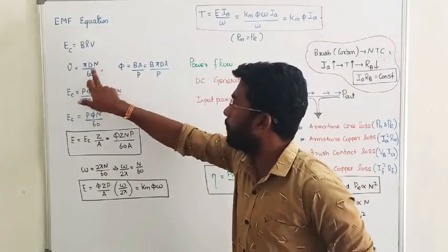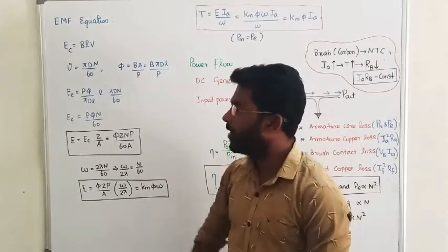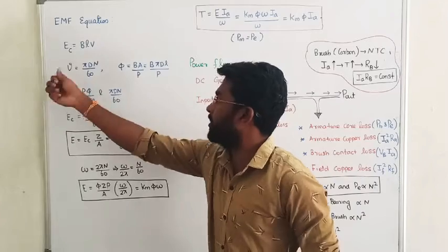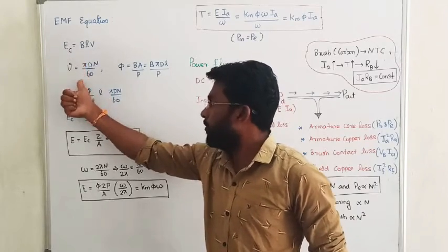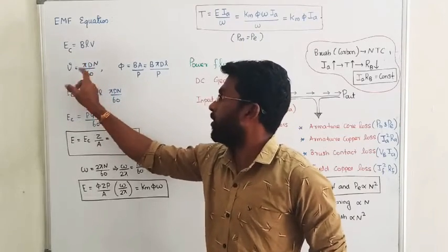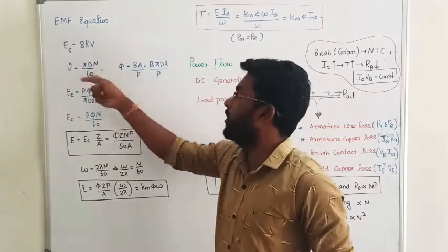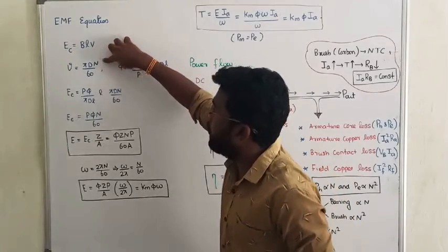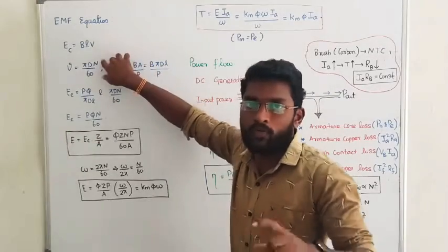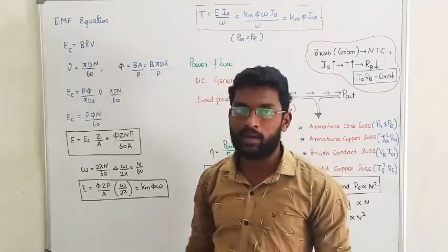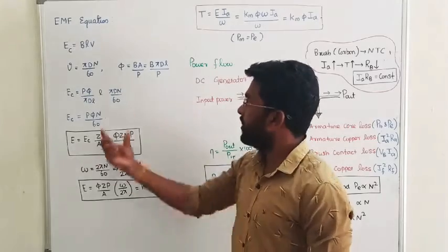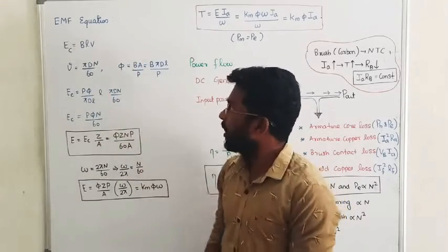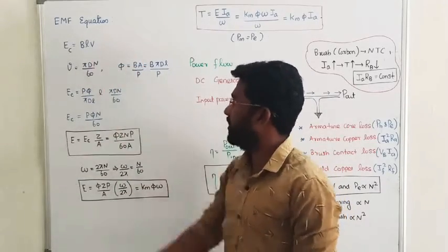Frequency here means the number of rotations per minute. Speed can be written as distance by time, and time is inversely proportional to frequency, so the denominator time becomes 1/f, where f is the number of rotations per minute. That is how we bring speed into the DC machine equation. Now we know the velocity.